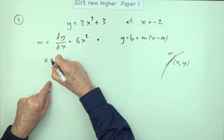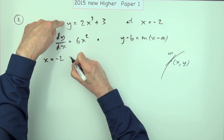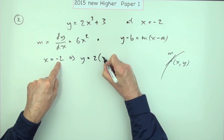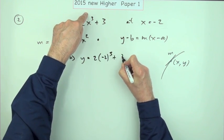Now it's just a case of working them out in any order you like. So x is negative two, putting into the first one, y would be 2 times the negative two cubed plus 3.